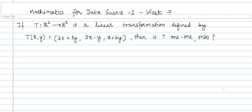Hello everyone. In this video, let's check if a given linear transformation is 1-to-1 or onto. The linear transformation here is from R2 to R3 and it is defined by T equal to (2x plus 3y, 5x minus y, x plus 6y).